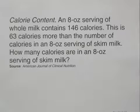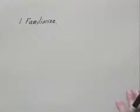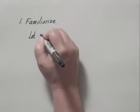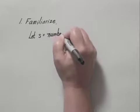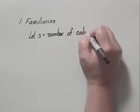We'll solve this problem by using our 5-step problem-solving process. The first step is to familiarize ourselves with the problem situation. First of all, we read the problem carefully, and then we define a variable. In this case, we're looking for how many calories are in an 8-ounce serving of skim milk.